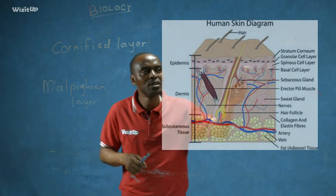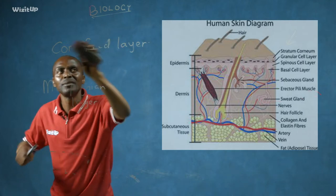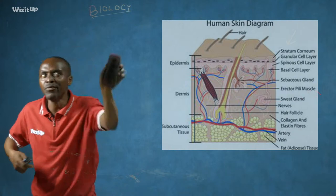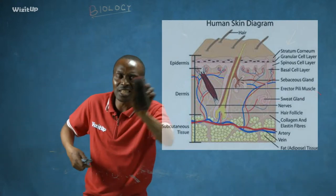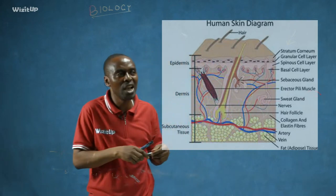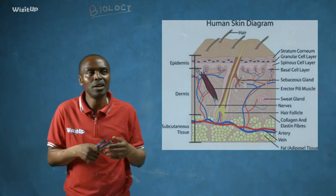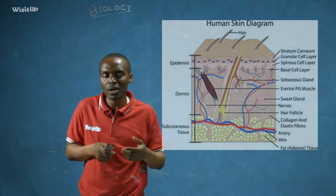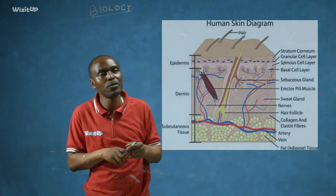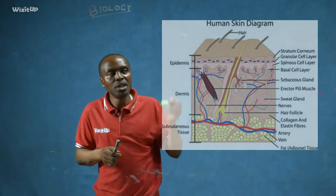The next layer that makes up the epidermis of the skin is the granular cell layer. The granular cell layer consists of living cells — unlike the cells of the stratum corneum, the cells here are alive. The function of the granular cell layer may be the replacement of dead and worn-out stratum corneum cells.